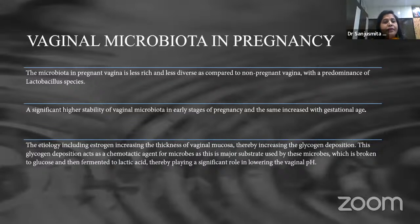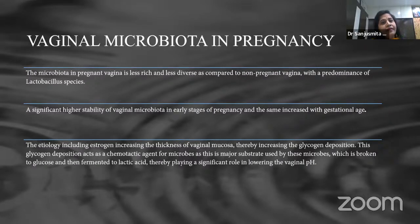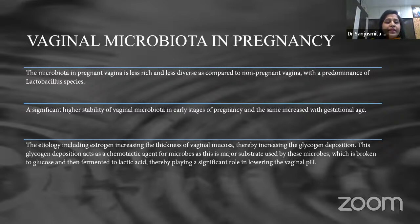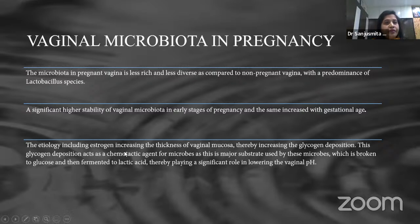In pregnancy, the vaginal microbiota is less diverse compared to non-pregnant vagina, with a predominance of lactobacillus species at higher estrogen levels. There is significant higher stability of vaginal microbiota in early stages of pregnancy, increasing with gestational age. Estrogen increases the thickness of vaginal mucosa and glycogen deposition. This glycogen serves as a substrate for microbes, broken down to glucose and fermented to lactic acid, which lowers vaginal pH and protects against invading microbes.